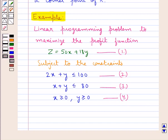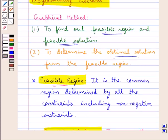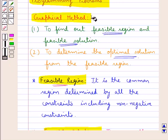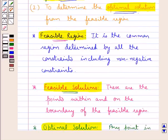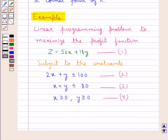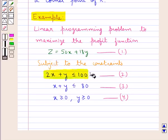We are supposed to solve this linear programming problem graphically. Since we know the graphical method involves two steps — first finding the feasible region and feasible solution, and in the second step finding the optimal solution from the feasible region — we will first find the feasible region, which is the common region determined by all the constraints including the non-negative constraints. We need to graph these constraints and the common region will be our feasible region.